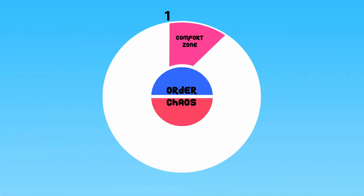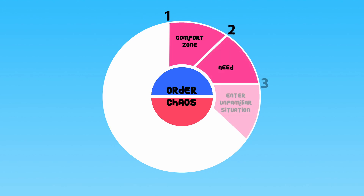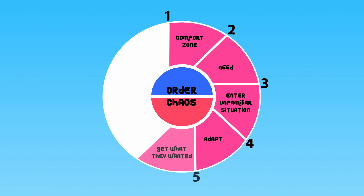One tool you could use is writer Dan Harmon's story wheel. He took centuries of storytelling principles and turned them into an easy-to-use guide for creating a compelling story, that aims to help you not only become a better writer but also a better storyteller. So here's the story wheel. 1. They are in a zone of comfort. 2. They want something. 3. They enter an unfamiliar situation. 4. They adapt to it.